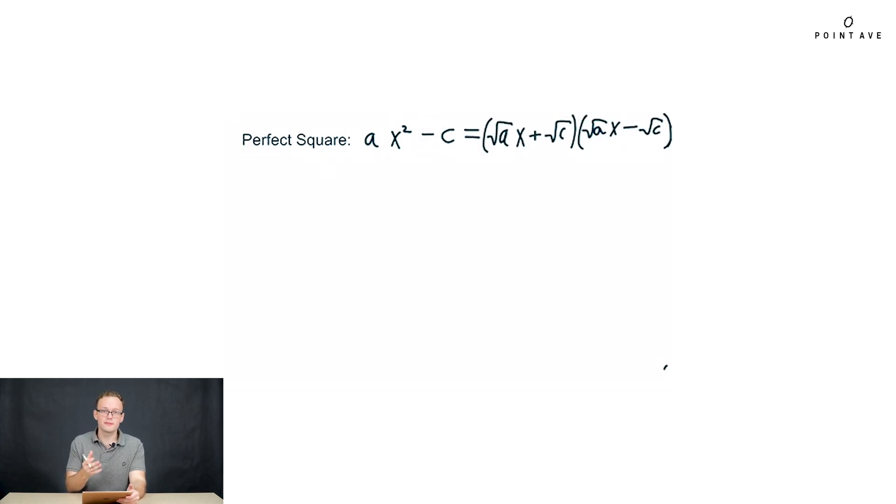We can use perfect squares and factor this expression into what we see here, effectively square rooting both the a and c terms, and then we have a plus and a minus in the two different factors. Let's apply this to x squared minus 144. The coefficient of x squared is 1, which is 1 squared, and 144 is 12 squared. When we factor it out, we get x plus 12 times x minus 12, and there we factored using perfect squares.